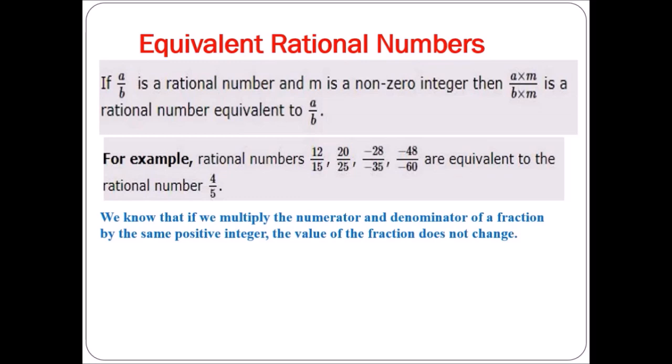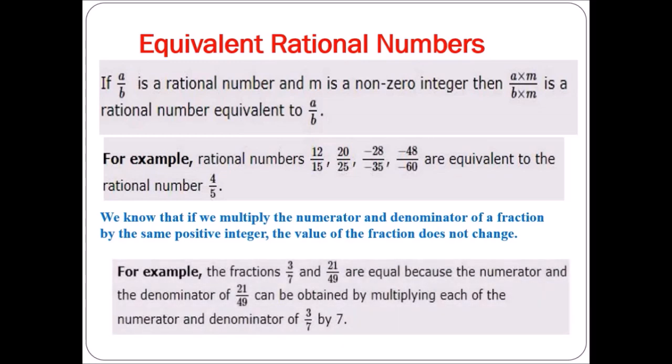We know that if we multiply the numerator and denominator of a fraction by the same positive integer, the value of the fraction does not change. For example, 3 upon 7 and 21 upon 49 are equal because the numerator and denominator of 21 upon 49 are obtained by multiplying each of the numerator and denominator of 3 upon 7 by 7. Similarly, we can either divide or multiply both the numerator and denominator by the same positive integer to get an equivalent rational number.